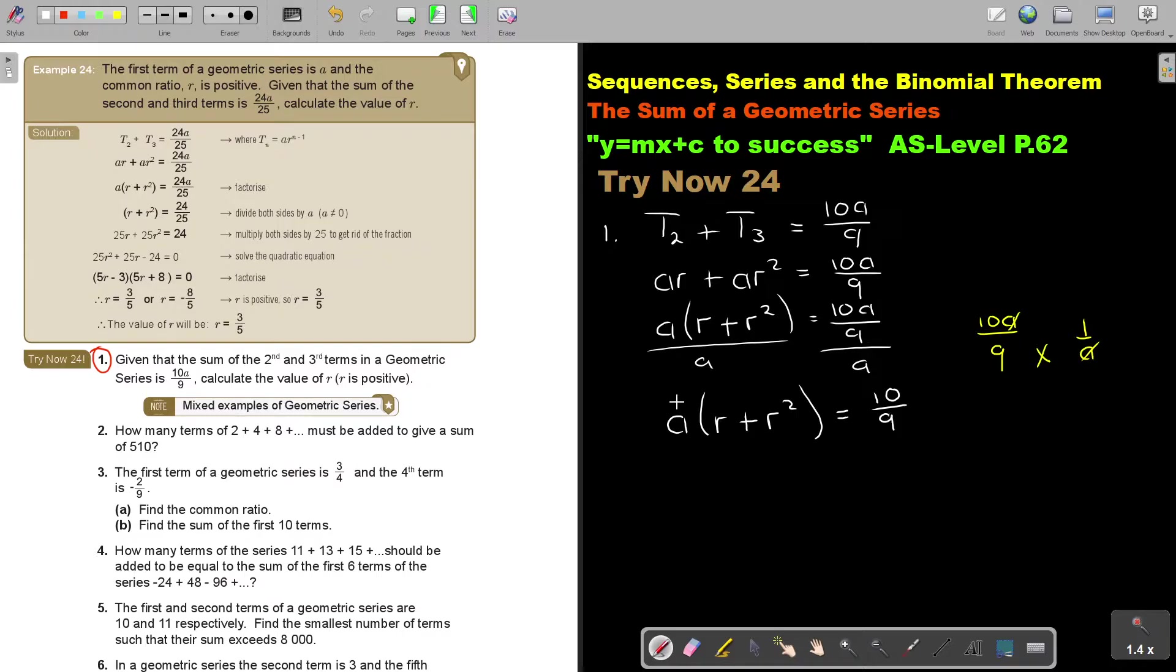So it's going to be AR plus AR squared equals 10 over 9. And now I'm just going to bring this 9 over. So I cross multiply. So it's 9AR plus AR squared is equal to 10.